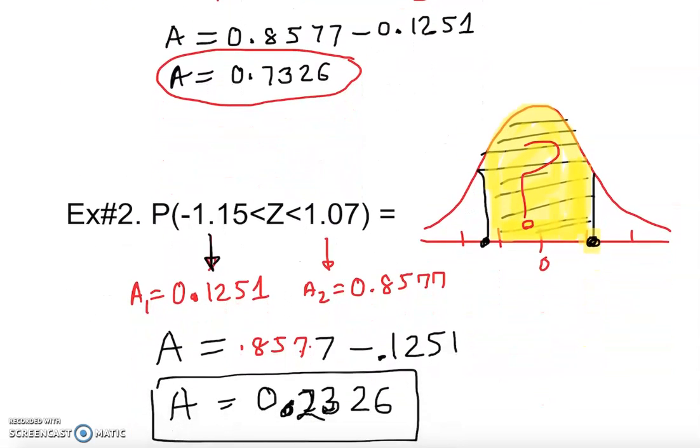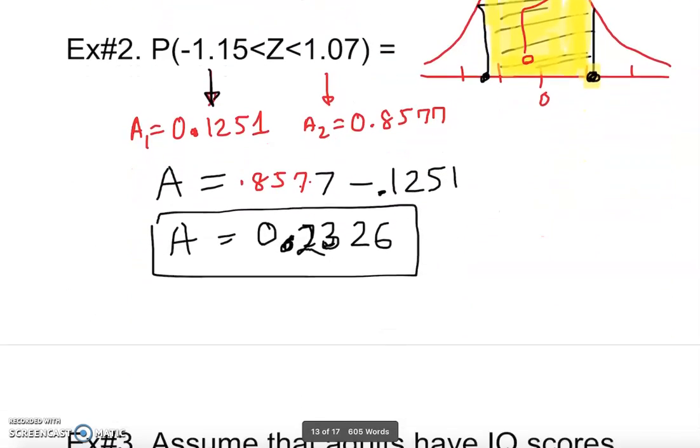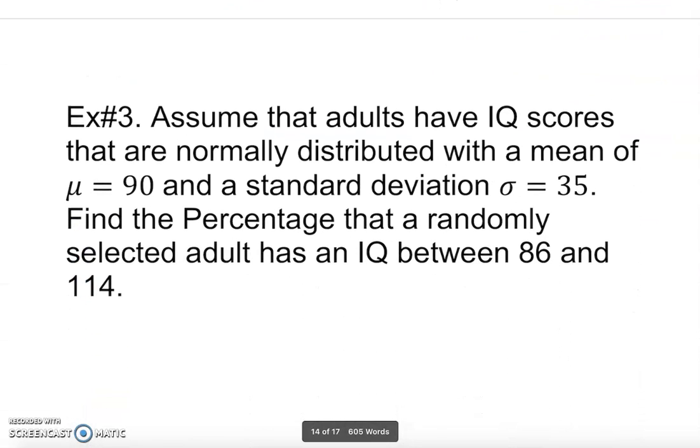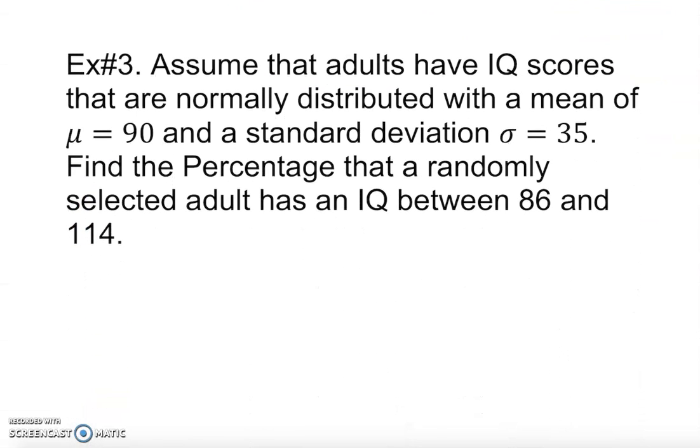Let's take a look at another one. Assume that adults have IQ scores that are normally distributed with a mean of 90 and a standard deviation of 35.